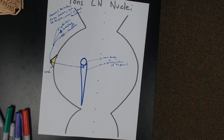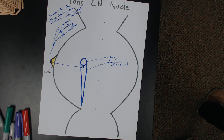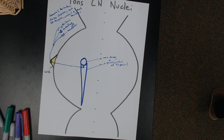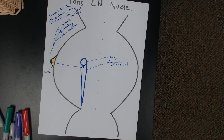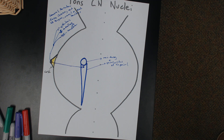Name the three divisions: ophthalmic, maxillary, and then mandibular. So ophthalmic — think eye. Maxillary — think cheek. Mandibular — think jaw.